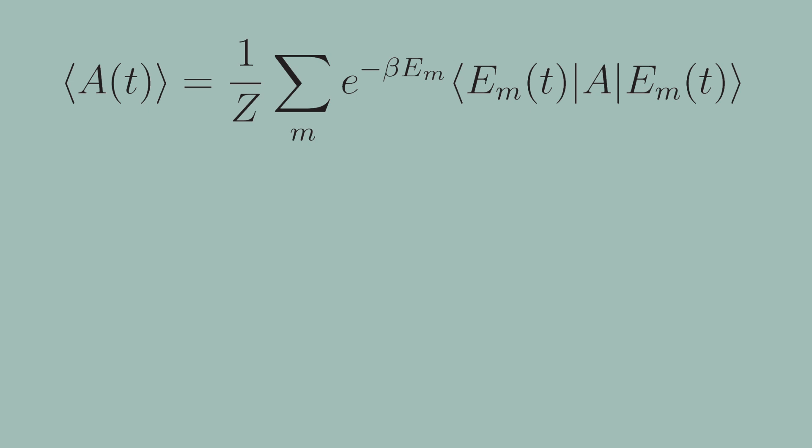Because we're working in the interaction picture, we know how the free Hamiltonian's energy eigenstates are going to evolve in time under this new perturbation. And we can insert our definitions that we worked out previously from the interaction picture into our expectation value.